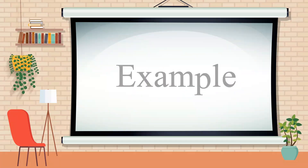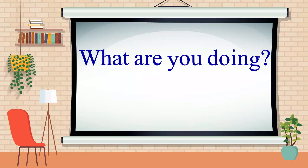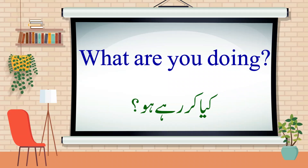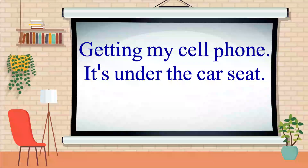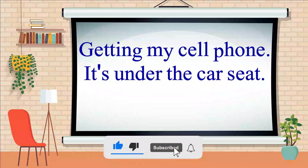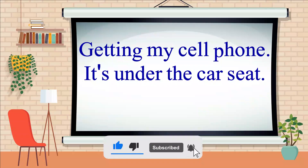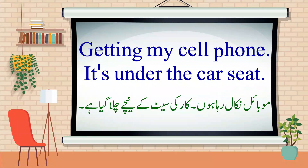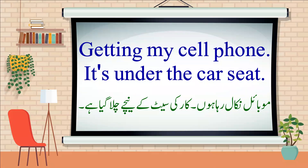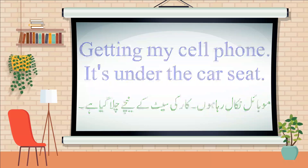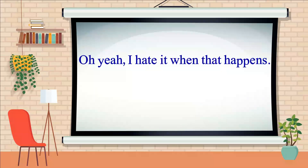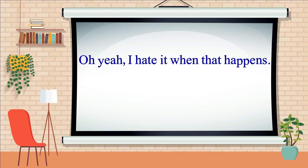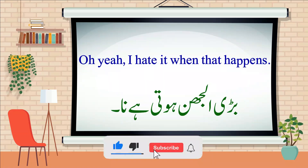Example. What are you doing? Kya kar rahe ho? Getting my cell phone. It's under the car seat. Mobile nikaal raha hoon. Car ki seat ke niche chala gaya hai. Oh yeah, I hate it when that happens. Badi uljan hoti hai na.